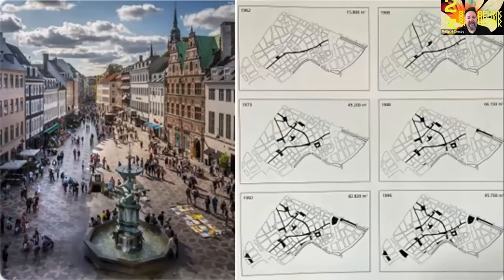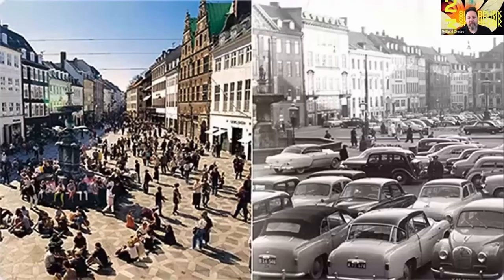One of the most famous examples of incrementalism in urban design is the pedestrianization of central Copenhagen, which between 1962 and 1996 expanded from a single street to an entire network of streets and public squares given back to pedestrians. They slowly removed between two and three percent of the parking spots in the center of the city each year, gradually reclaiming space from the automobile and reclaiming their public squares for people rather than parking.